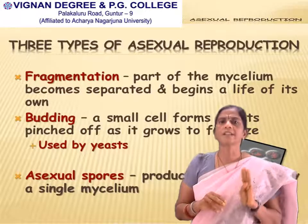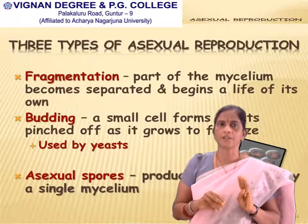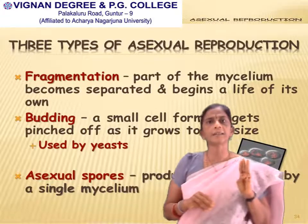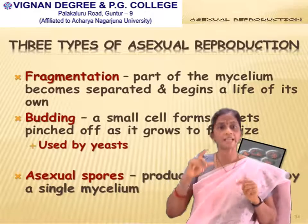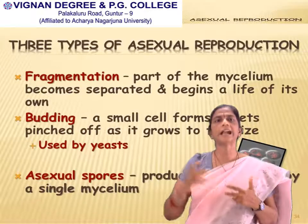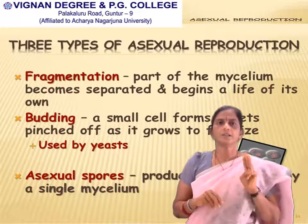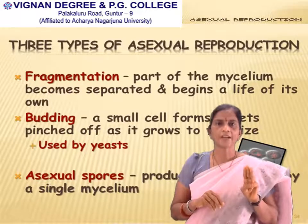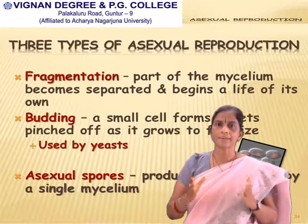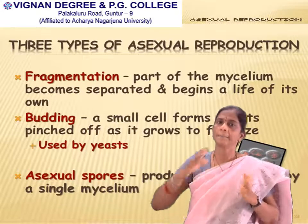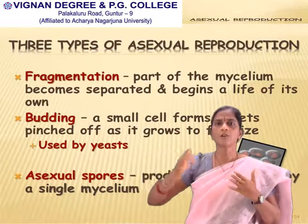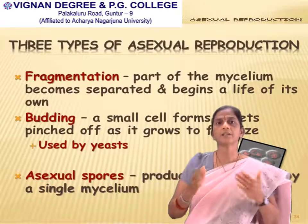There are three types of asexual reproduction: fragmentation, budding, and spores. In fragmentation, a part of the mycelium becomes separated and begins a life of its own.